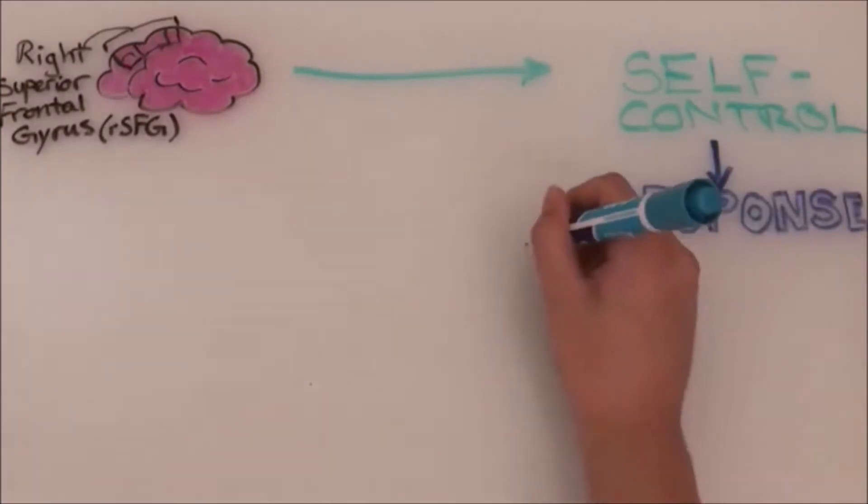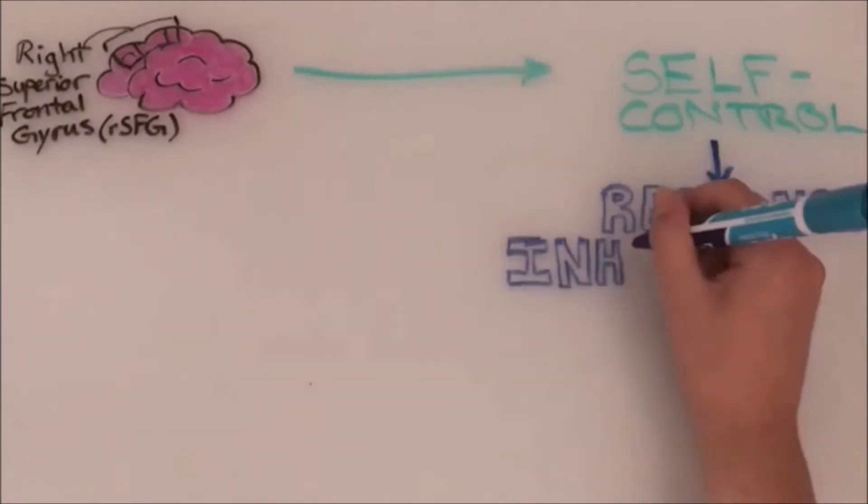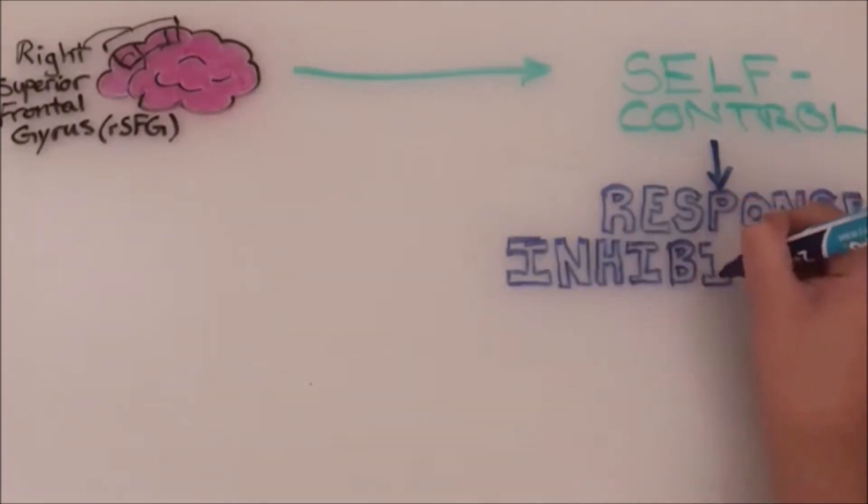Response inhibition is more about when you're about to do something instinctively, but your brain stops you just in time. It's like when you stop yourself from talking over someone or stop a certain movement that's instinctive but not necessarily what you want at the time.